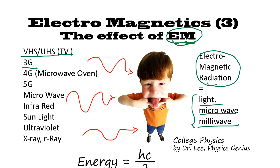TV signal, 3G, 4G, 5G, microwave—all the weapons use microwave—infrared, sunlight, ultraviolet, X-ray, and gamma ray. They are all the same EM wave.